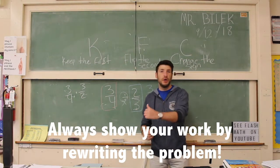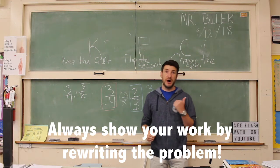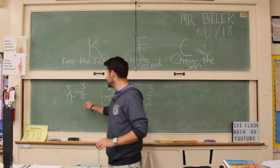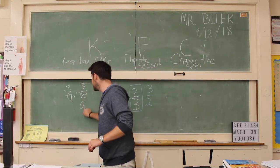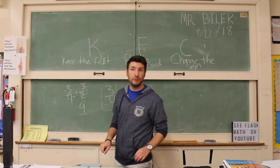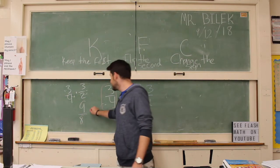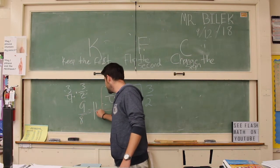Because remember, in multiplication, we multiply straight across. We do not need a common denominator. So three times three becomes nine, four times two becomes eight. Let's simplify this guy down to one and one-eighth.